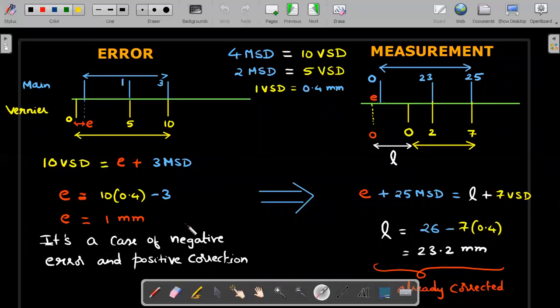When you try to place an object and push this, it will always show lesser reading. Therefore the error is negative and correction should be positive.